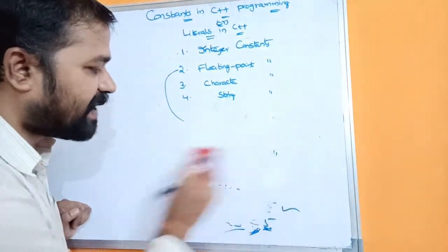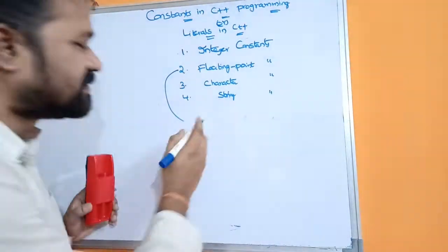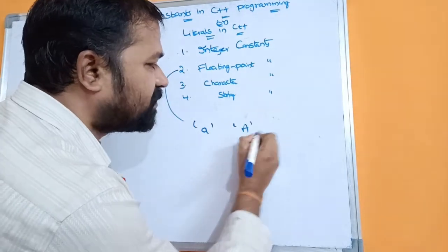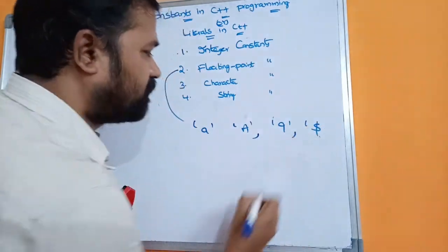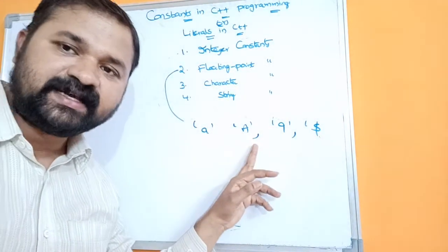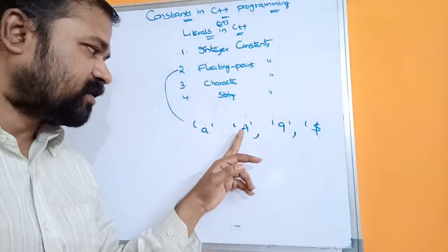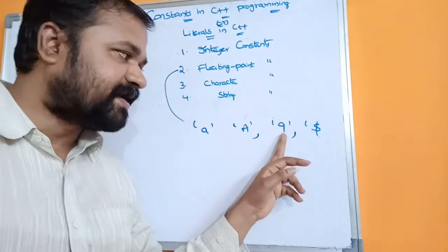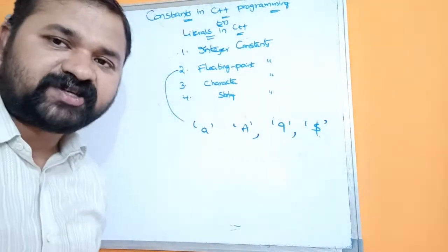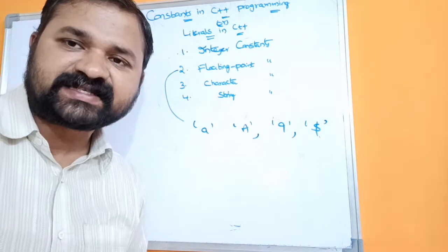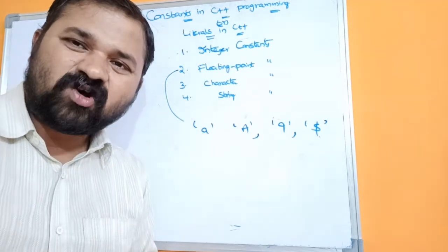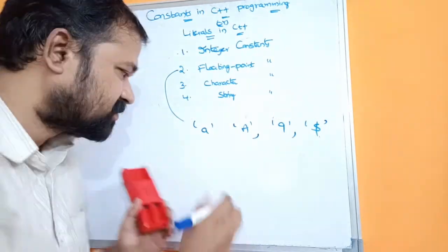Now let us see about character constants. A character constant means a single character enclosed in single quotation marks. It may be either an alphabet, a digit, or a symbol. And the next one is string constants — a string means a collection of characters enclosed in double quotation marks, where the characters may be alphabets, digits, or symbols.